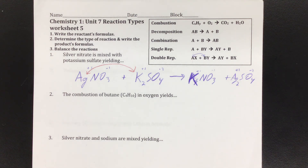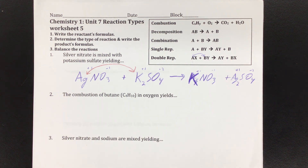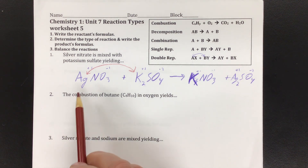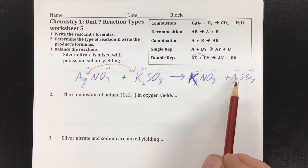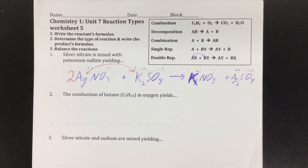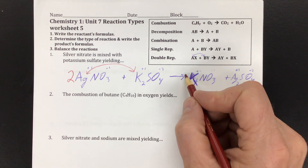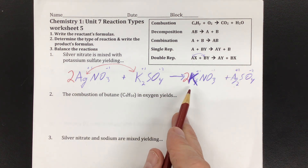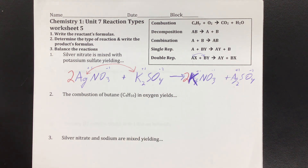Predicting the products is pretty straightforward once you identify the type of reaction. Then it's all down to balancing — remember that you do the polyatomics first, and then go left to right one at a time. I have one nitrate on the left, one nitrate on the right — good. One sulfate on the left, one sulfate on the right. The polyatomics are done. Going left to right: I have one silver on the left but two silvers on the right, so I put a 2 in front of AgNO3. Now I have two nitrates on the left, so I need two on the right. Then two potassiums on the left, two potassiums on the right. One sulfate on the left, one sulfate on the right. Done.